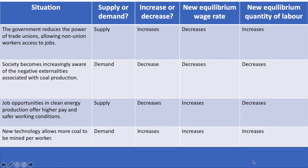Fourth, new technology will increase worker productivity and across the industry increase marginal revenue product. This would increase the demand for labour and cause the equilibrium wage rate and equilibrium quantity of labour to rise.